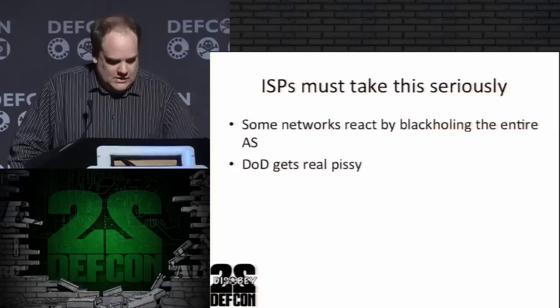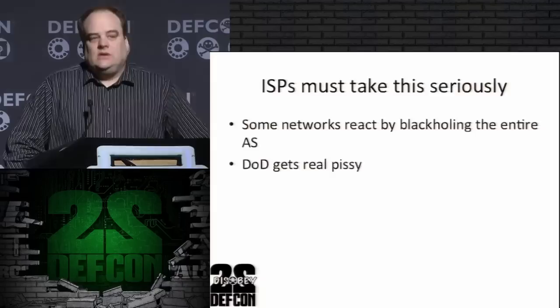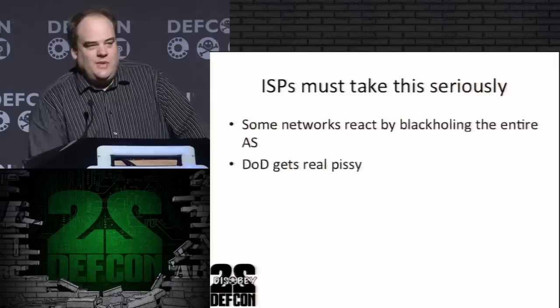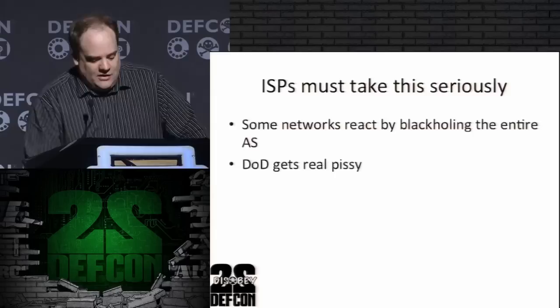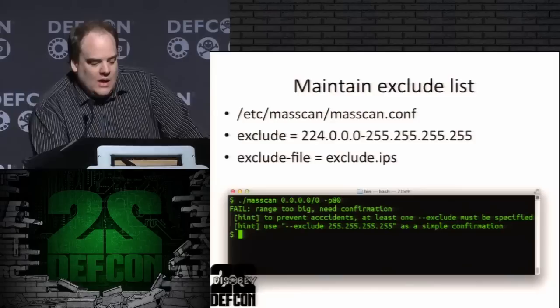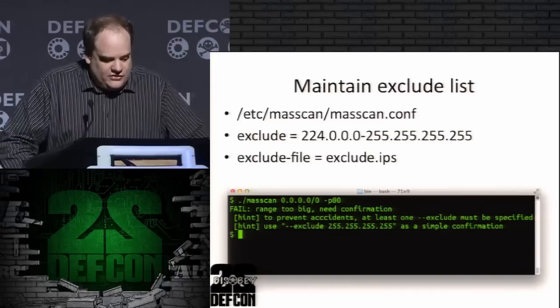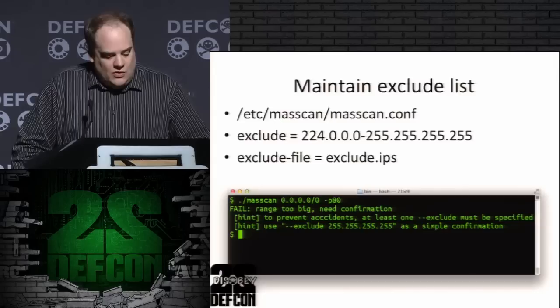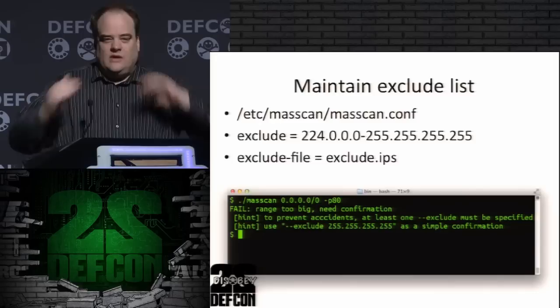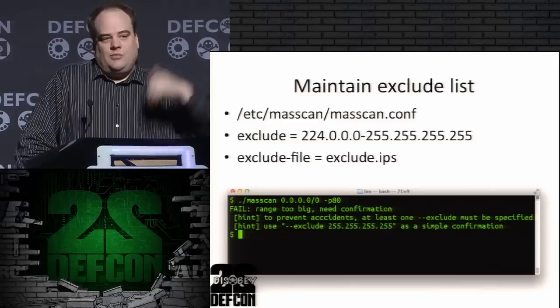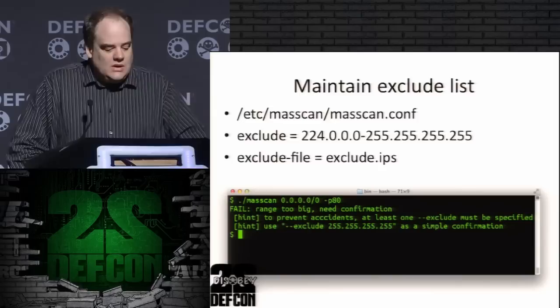ISPs must take this seriously. One of the biggest things is the DOD gets really angry. When people in suits show up at the ISP's office and say 'we're seeing traffic from you and we don't want to,' pressure comes down on us to say these address ranges need to be excluded. The exclude list is pretty easy — it's the same way as nmap: just have a configuration file with an exclude list, and it supports comments. Whenever people send us an abuse mail and we say we're just doing research scanning, we'll happily take you off the list if you want, and we add their IP range.